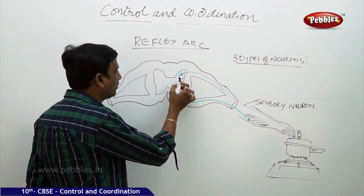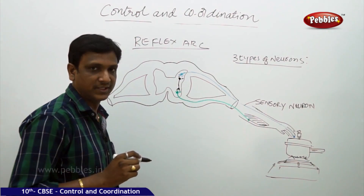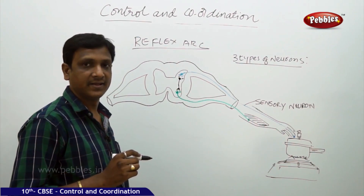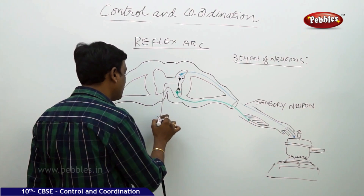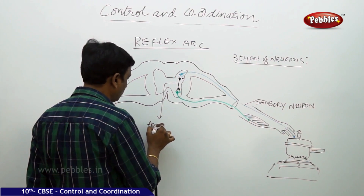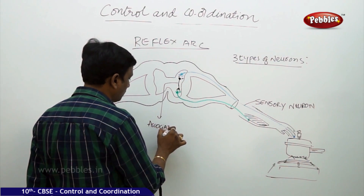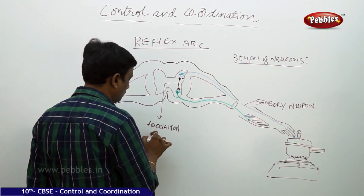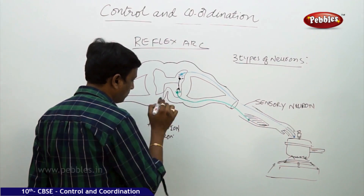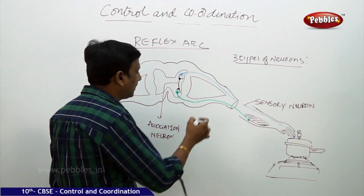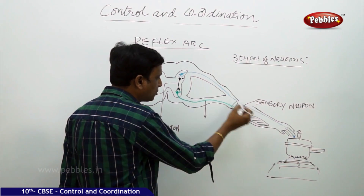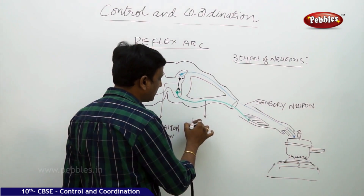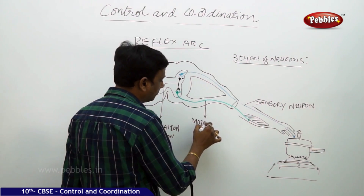The second neuron is receiving the information from the sensory neuron, analyzing it, and taking the decision — that is the association neuron. The third one, which carries the orders to the effector, is called the motor neuron.